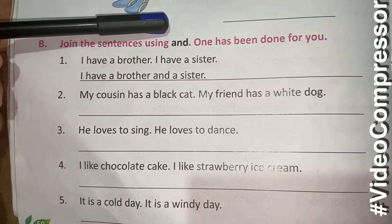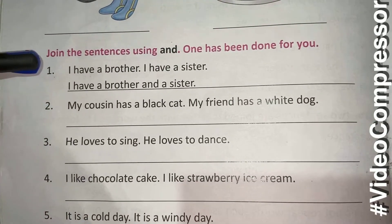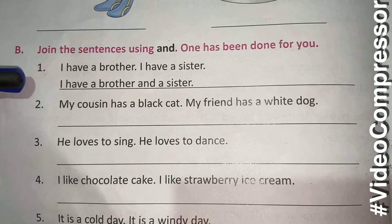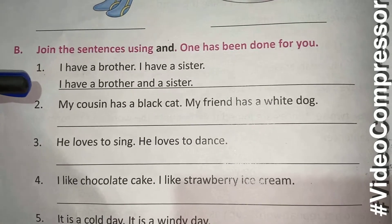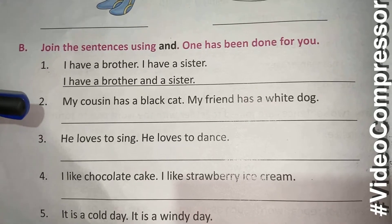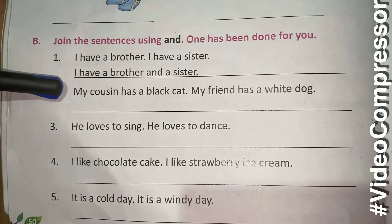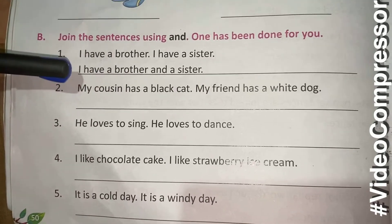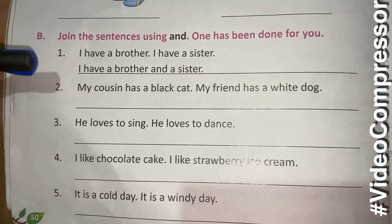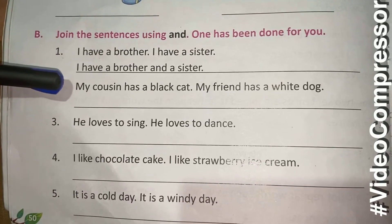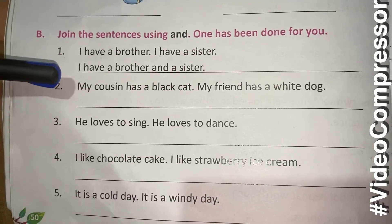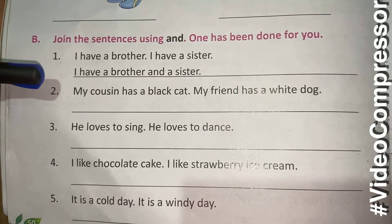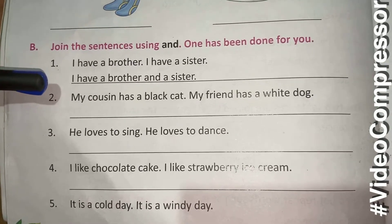One has been done for you: 'I have a brother. I have a sister.' The best way to write is: 'I have a brother and a sister.' My cousin has a black cat. My friend has a white dog. The correct way will be: 'My cousin has a black cat and my friend has a white dog.'